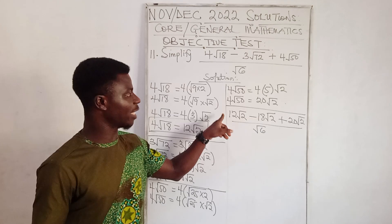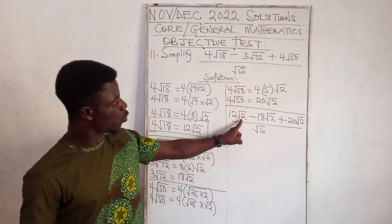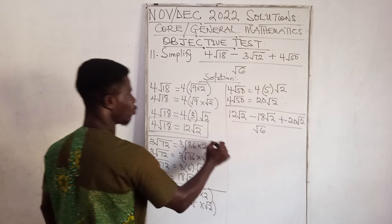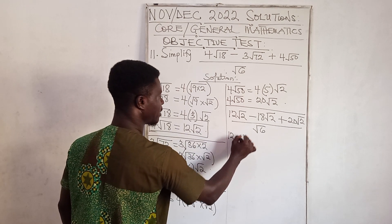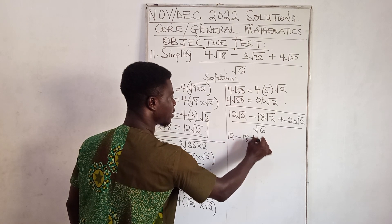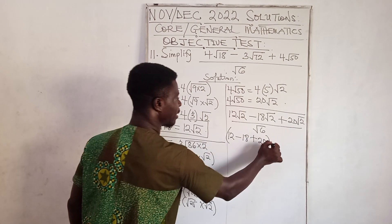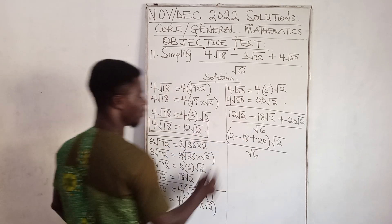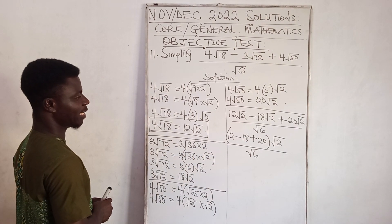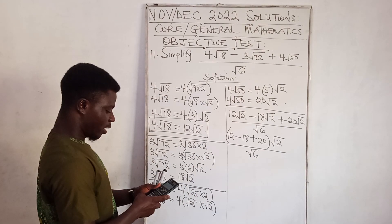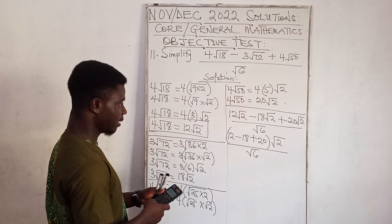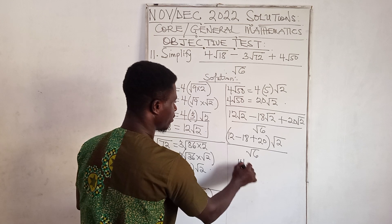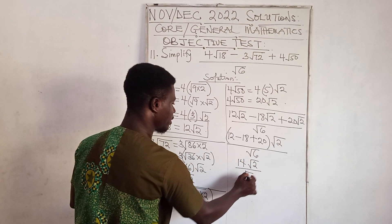Checking the numerator, we have like terms — all have √2. So we combine: (12 − 18 + 20) times √2, divided by √6. That gives us 14√2 divided by √6, since 12 minus 18 plus 20 equals 14.